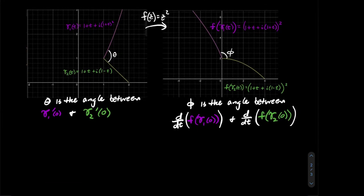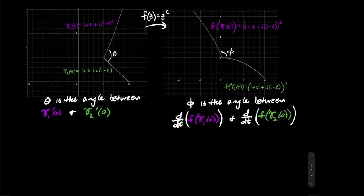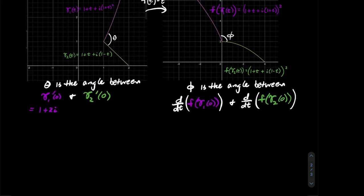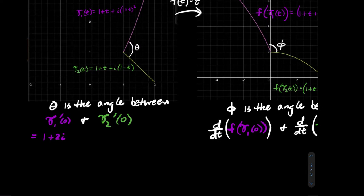Theta is the angle between the tangent vectors gamma 1'(0) and gamma 2'(0), and phi is the angle between the derivatives d/dt[f(gamma 1)](0) and d/dt[f(gamma 2)](0). Note: you cannot just plug gamma 1' into f directly — you need the chain rule. Computing gamma 1'(0): taking the derivative of the parabola formula with respect to t gives 1+2i, which we identify with the ordered pair (1, 2).